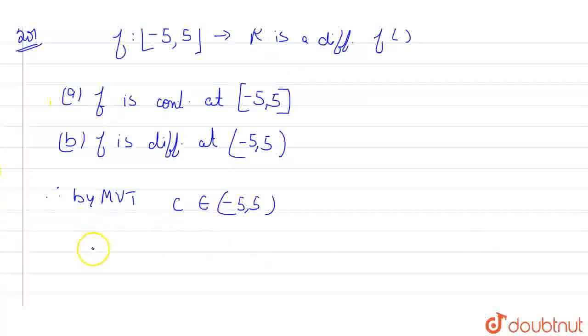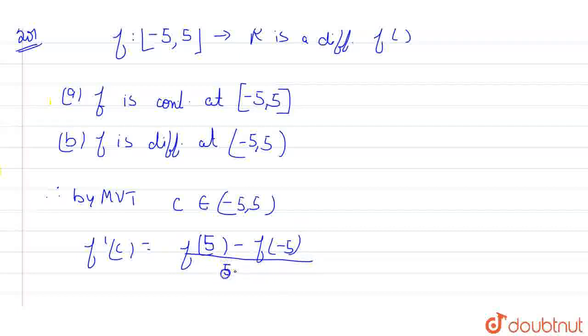So we can say that using Lagrange's mean value theorem, f'(c) will become f(b) - f(a). Here b is 5 and a is -5, divided by b - a, so it will become 5 - (-5).